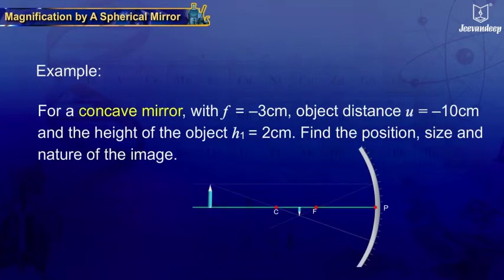For a concave mirror with F equals to minus 3 cm, object distance U equals to minus 10 cm, and the height of the object, H1, is equal to 2 cm.